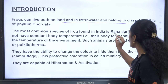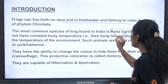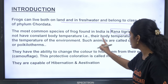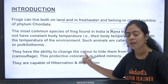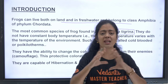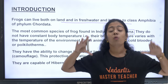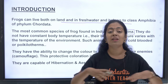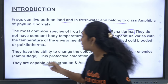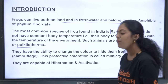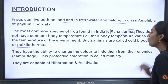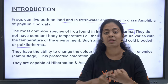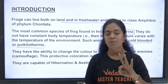The most common species of frog found in India is Rana tigrina. They do not have a constant body temperature — their body temperature varies with the temperature of the environment. Such organisms are called poikilotherms, also known as cold-blooded organisms. Fishes, amphibians, and reptiles are all cold-blooded.